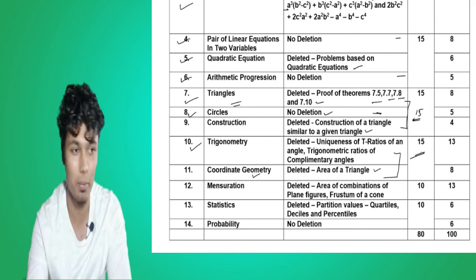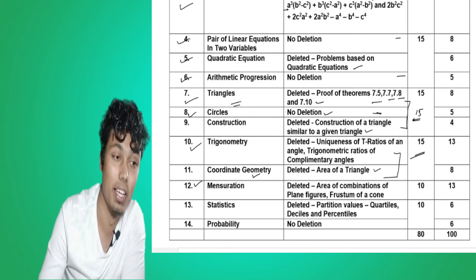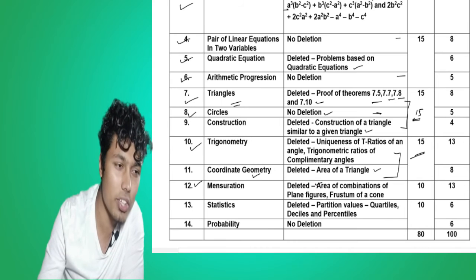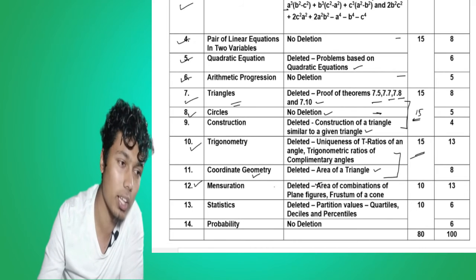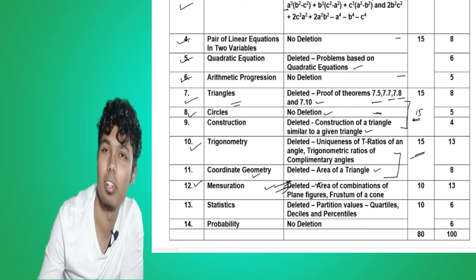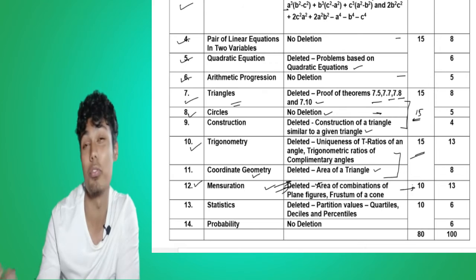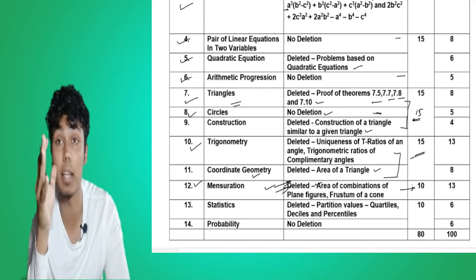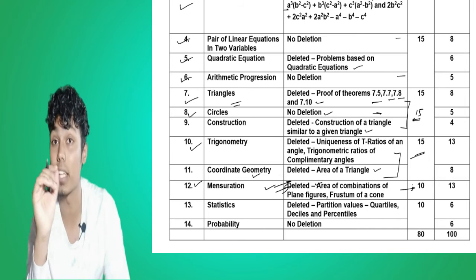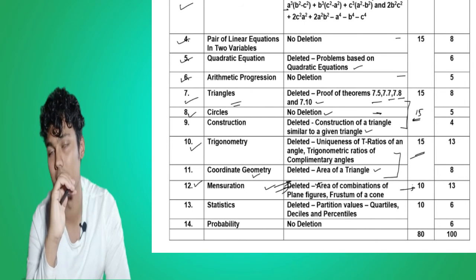Do we have any more important chapters? Chapter number twelve is Mensuration — look very carefully. The deleted portions from Mensuration are: area of combinations of plane figures, and frustum of a cone — these two are the deleted portions from this chapter. This chapter alone comprises ten marks, so it is a very important chapter — the most important chapter in mathematics for Class 10. If you happen to study this chapter properly, you can get ten marks.